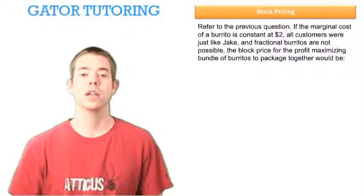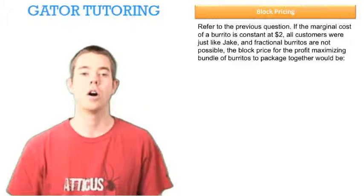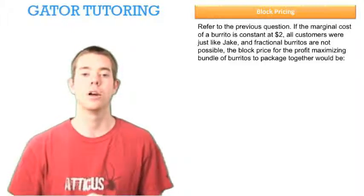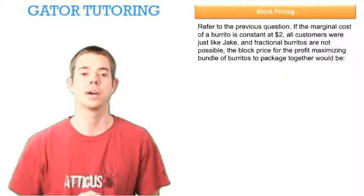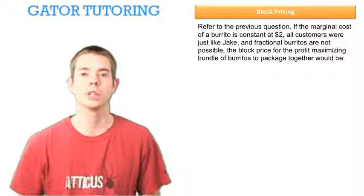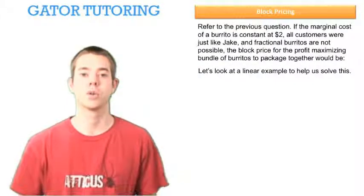Refer to the previous question. If the marginal cost of a burrito is constant at $2, all customers were just like Jake, and fractional burritos are not possible, the block price for the profit maximizing bundle burritos to package together would be blank. So we need to solve for the block price.